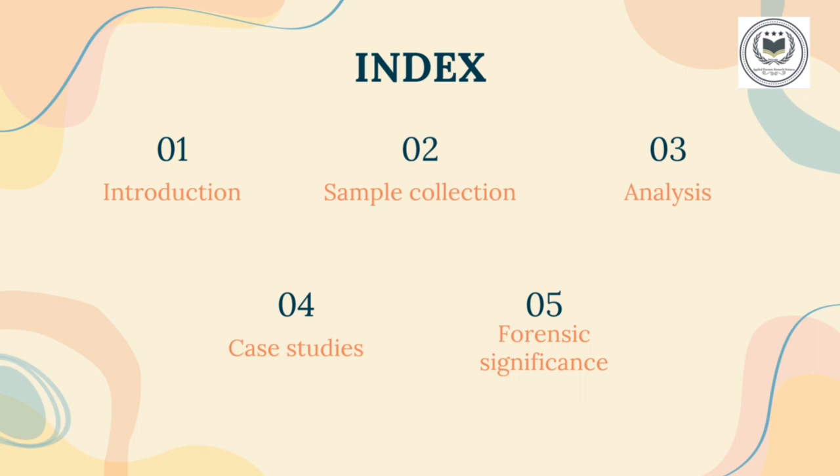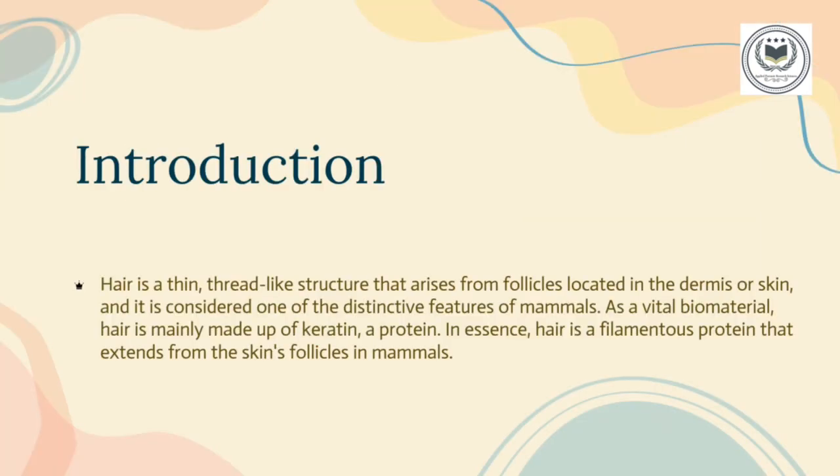Let's begin with the introduction to hair. Hair is a protein filament that grows from the follicle found in the dermis or skin. It is one of the defining characteristics in mammals. Hair is an important biomaterial primarily composed of keratin. The parts of hair include the bulb, hair follicle, tip, shaft, medulla, cuticle, and more.